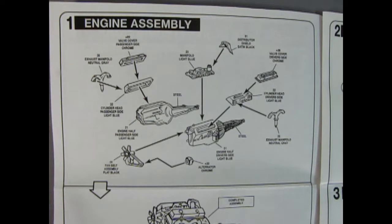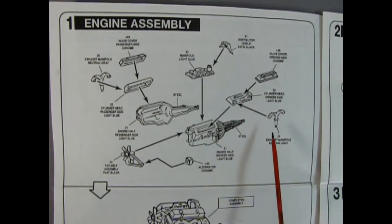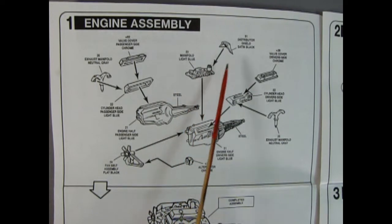Here we have our Corvette motor - the left and right hand side block with the front timing chain cover molded in place as well as our manual transmission out the back. There's our cylinder heads, valve covers, the Siamese exhaust manifolds, as well as the alternator and our fan belt and pulley assembly. And then we've got our intake manifold with the distributor molded in place and then we have our distributor shield up here.